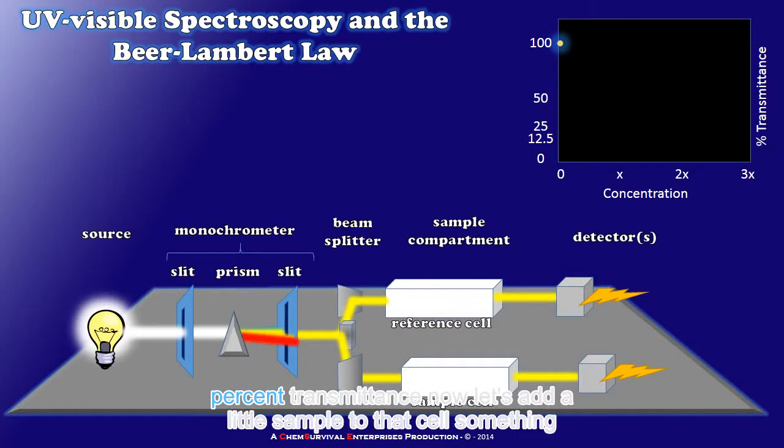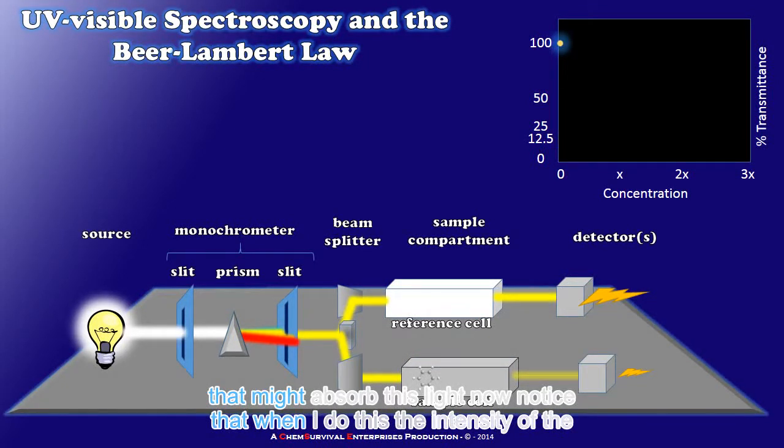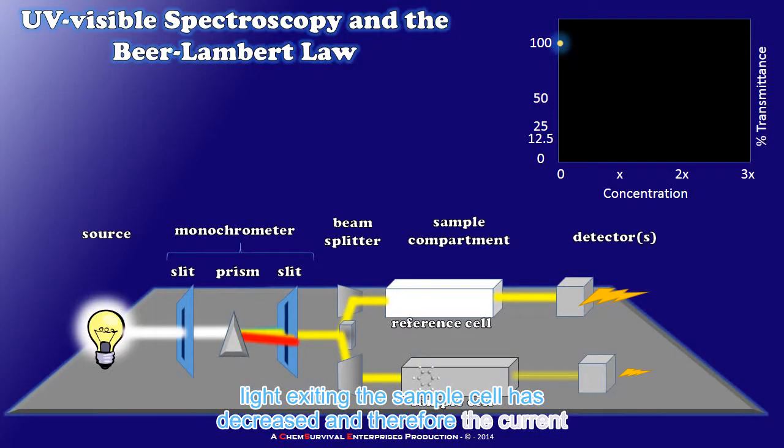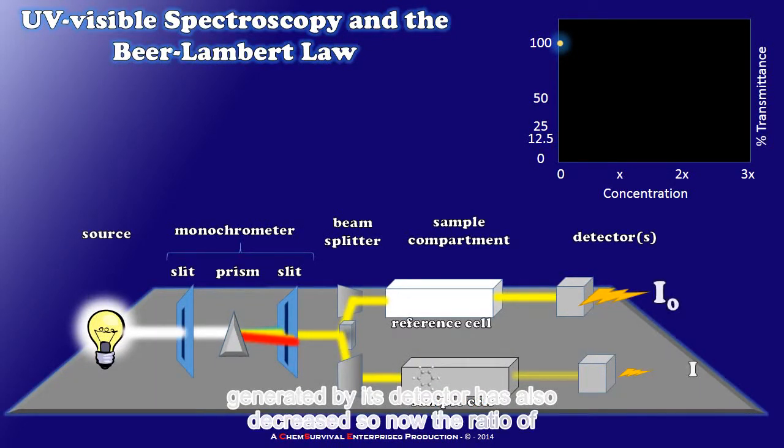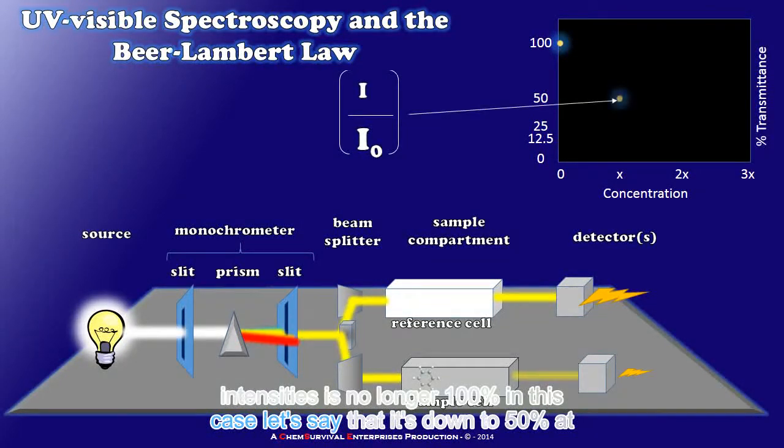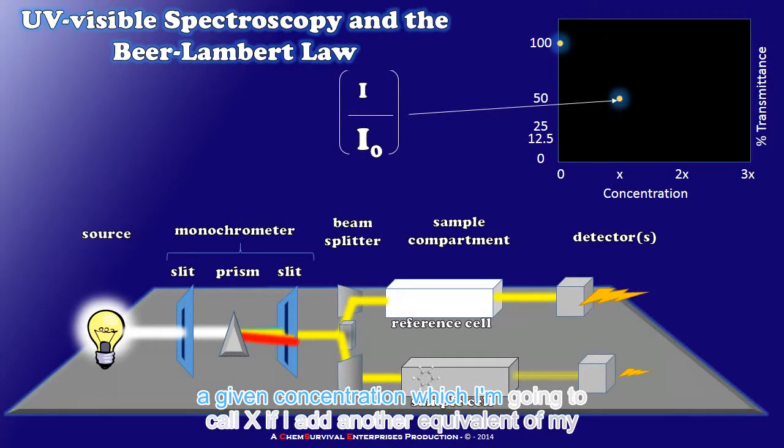Now let's add a little sample to that cell, something that might absorb this light. Notice that when I do this the intensity of the light exiting the sample cell has decreased and therefore the current generated by its detector has also decreased. So now the ratio of intensities is no longer 100%. In this case let's say that it's down to 50% at a given concentration which I'm going to call X.